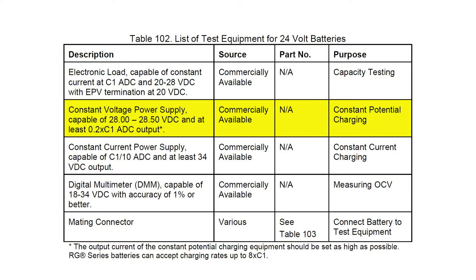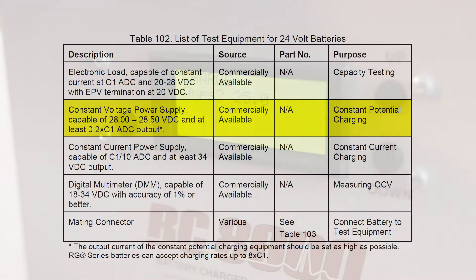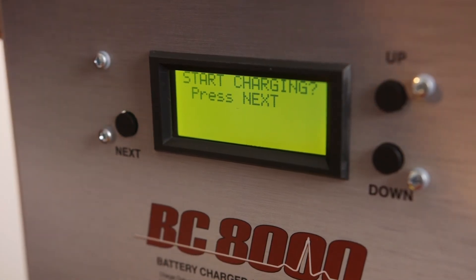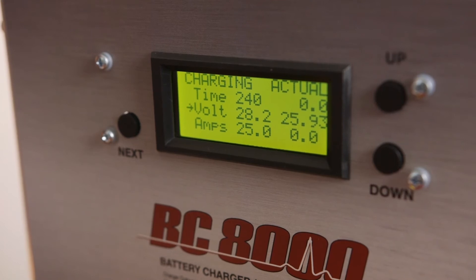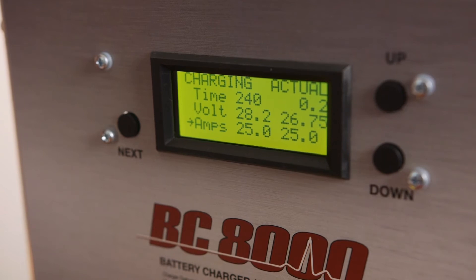Per Table 102 of the CMM, the current needs to be at least 20% of the C1 rate. For this battery, the C1 rate is 42 amps, so the charge current needs to be at least 20% of 42, or 8.4 amps. However, it is best to use the maximum output of 25 amps to cut down on charging time. With these settings in place, we can now start the charge cycle. As you can see, the battery is charging at a voltage level above 24 volts and a current of 25 amps. Once the battery voltage reaches 28.2 volts, the voltage will be held constant at this value, and the current will taper down to a very low level. We'll come back in 4 hours when the charging cycle is complete.